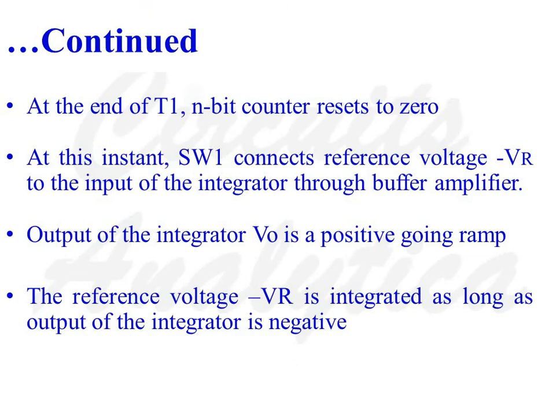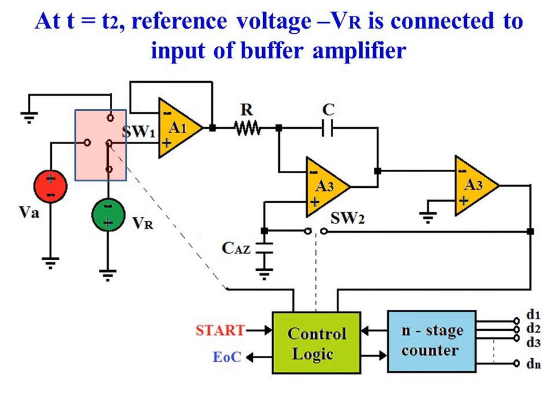At the end of T1, the n-bit counter resets to 0. At this instant, switch SW1 connects reference voltage minus VR to the input of the integrator through the buffer amplifier. The output of the integrator V0 is a positive going ramp. The reference voltage minus VR is integrated as long as the output of the integrator is negative. So during phase 2, at T equals T2, switch SW1 changes its position to connect reference voltage minus VR to the input of the buffer amplifier.